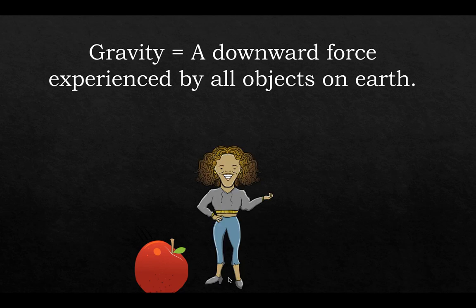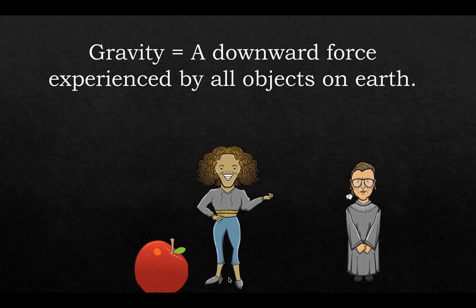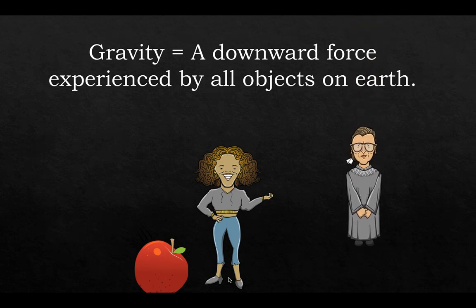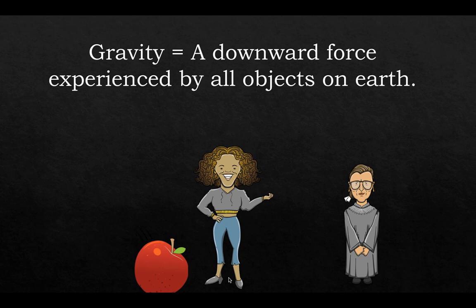Here's another misconception: even though Beyoncé is standing on the ground and not falling, there is still gravity acting on her. Gravity is pulling her down, keeping her feet planted on the earth. And if Ruth Bader Ginsburg is jumping up during a workout, she comes back down to the earth after her jump due to gravity pulling her down. So gravity is experienced by all objects on Earth and it's always a downward force.